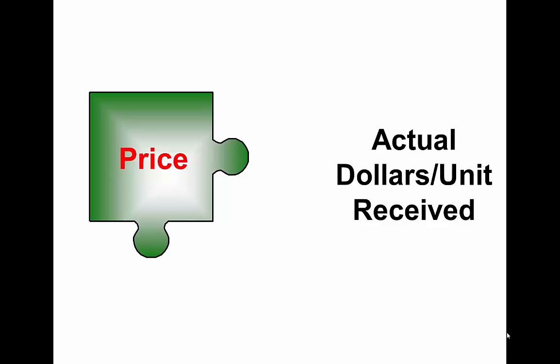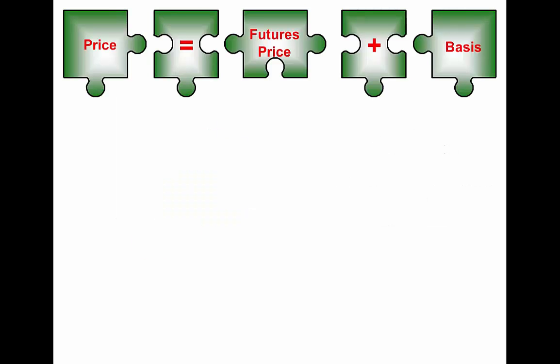Price is in the upper left-hand corner of the picture, and it is the actual dollars per unit received. It may include the cash price, it may be determined by a forward contract price, or it may be a combination of prices. You sell the commodity for a cash price but you've got a gain or loss from using a futures contract or a futures option contract, and that is added to — for gains — or subtracted from — for losses — to determine the actual price. The single most important thing to remember is that price equals the futures contract price plus the basis.